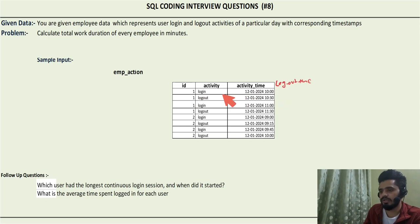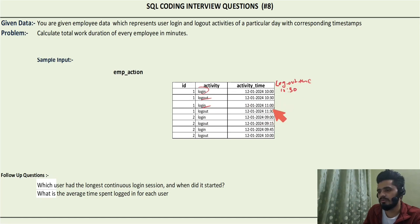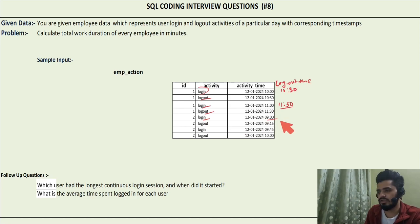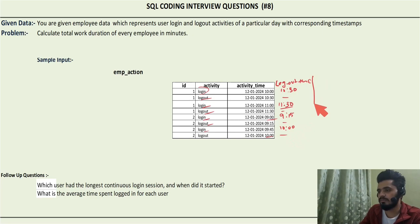For example, this login happens at 10 AM and the logout is at 10:30 AM, so we calculate logout_time as 10:30. We ignore the logout row itself. For the next login at 11, the logout time is 11:30. For employee two's login at 9, the logout time is 9:15. For the next login at 9:45, the logout time is 10. All logout rows can be ignored once we've captured the logout time against the login rows.